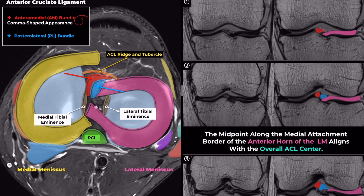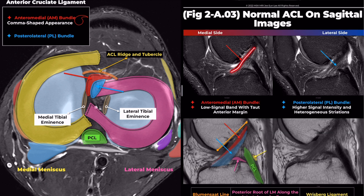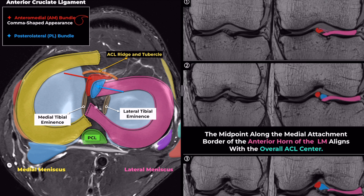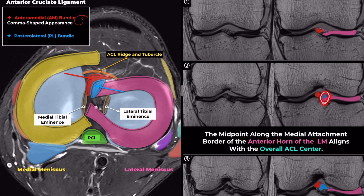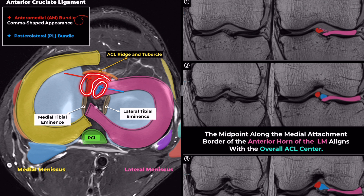Assessing the ACL in the coronal plane is more accurate than using the sagittal plane as the primary diagnostic plane. The red represents the anteromedial bundle of the ACL, and the blue represents the posterolateral bundle. The anteromedial bundle of the ACL has a distinctive convex, comma-shaped appearance at the tibial insertion. This comma shape encompasses the posterolateral bundle's anterior, more convex contour.